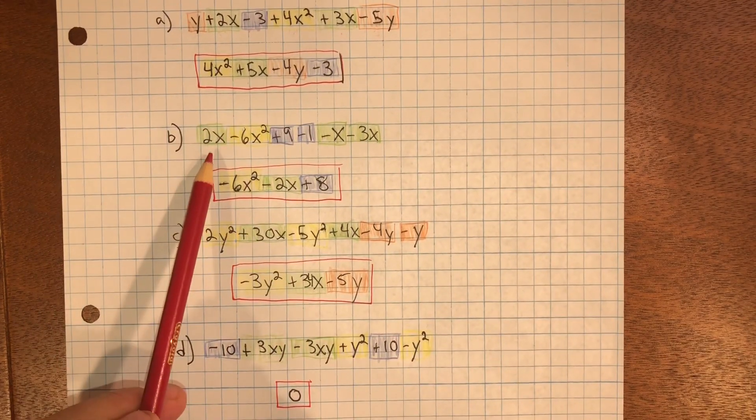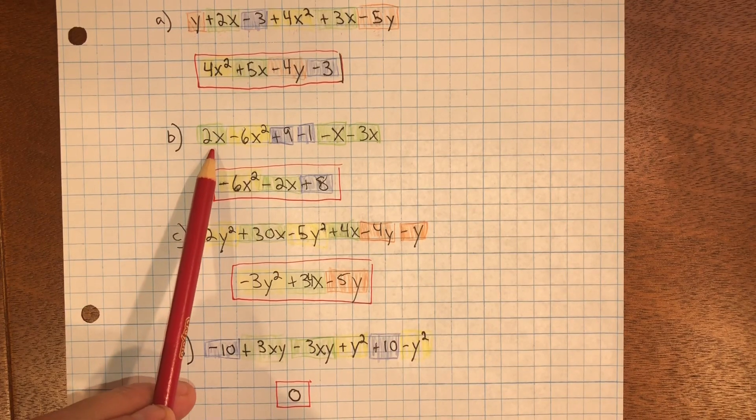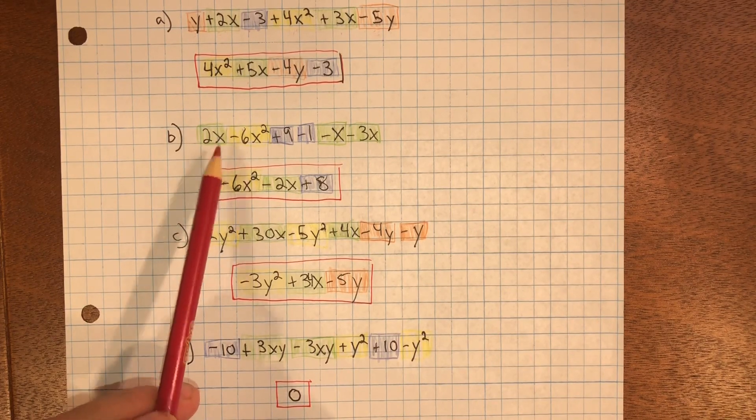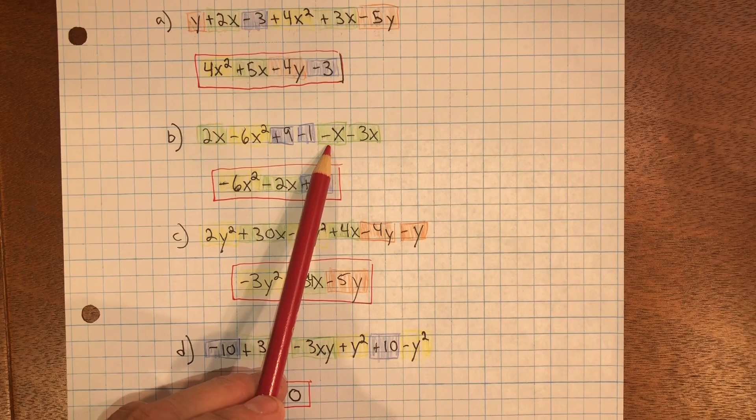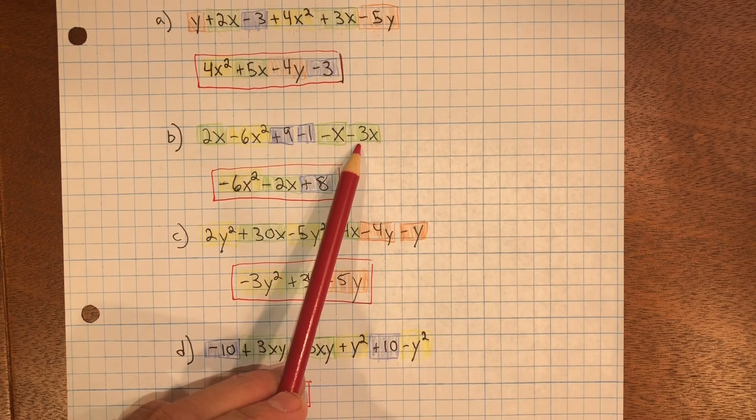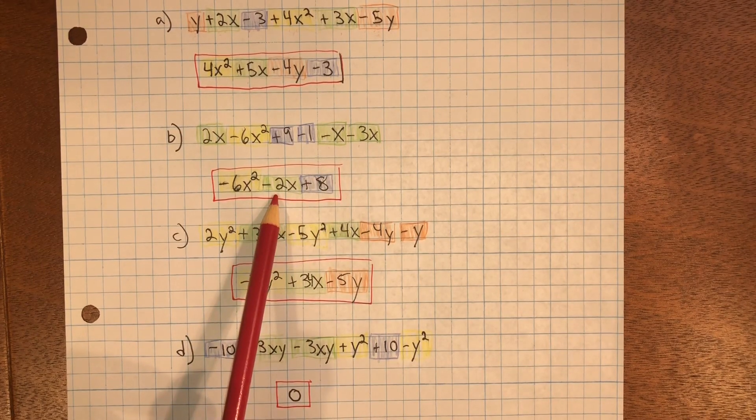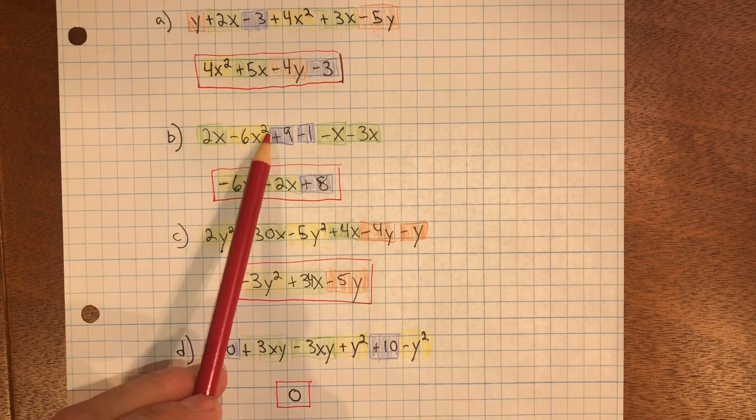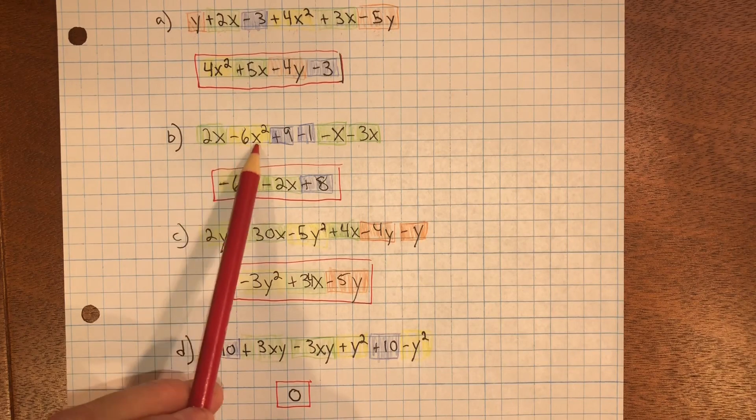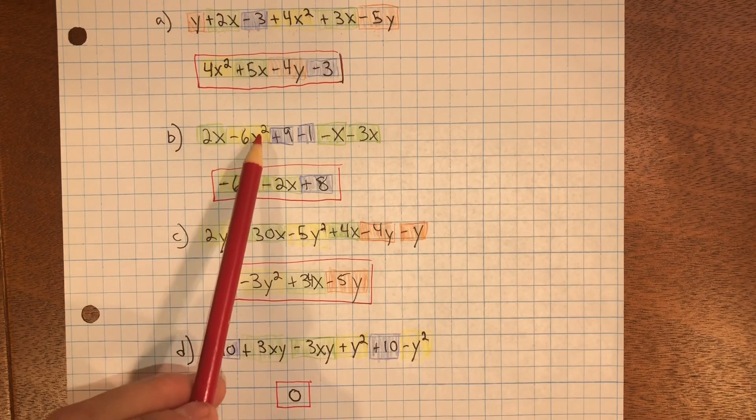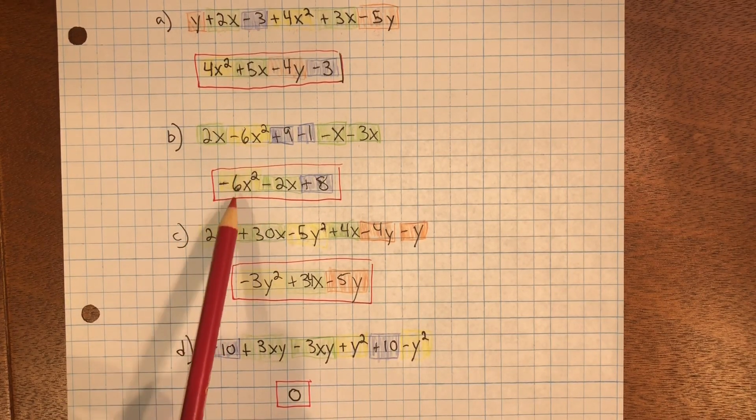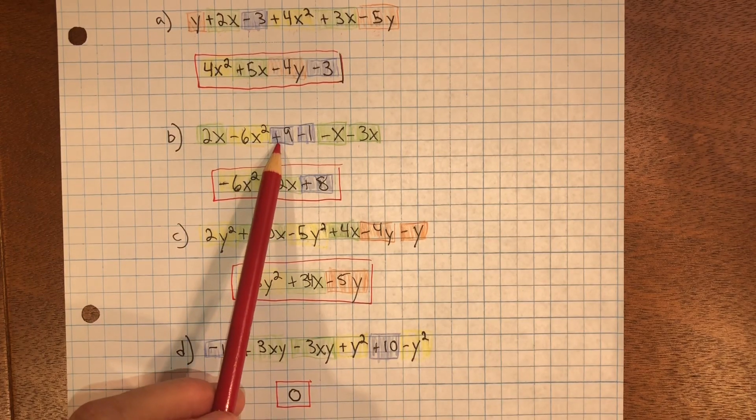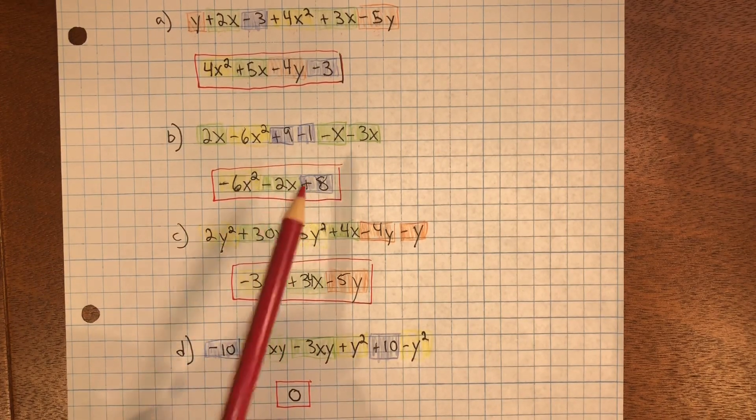Did the same thing in problem B. 2x minus x is x minus 3x is negative 2x. Negative 6x squared. You can clearly see there's only 1x squared term, so there it is. And then 9 minus 1 is 8.